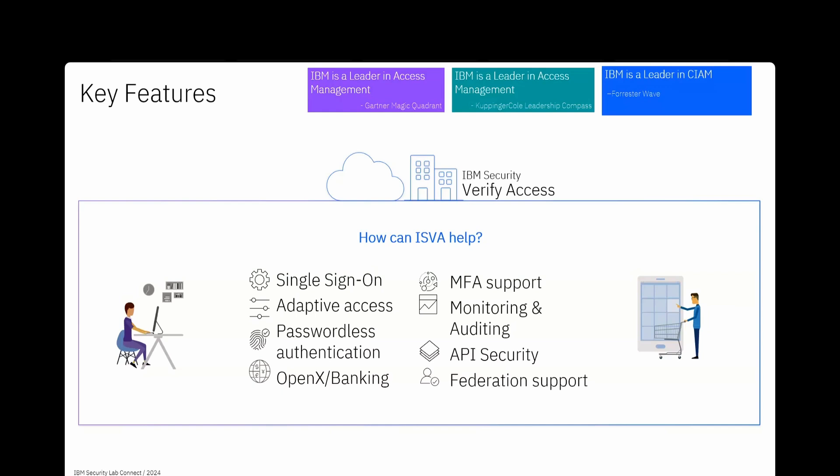ISVA also provides API security. Nowadays, most cloud applications use microservices, and these microservices-based APIs are everywhere and require secure communication. Mobile apps and single-page apps call microservices-based APIs, so you can leverage the advanced access control module capabilities in ISVA to secure API authentication and authorization. The federation support provides single sign-on between different unrelated domains using open standard protocols, which are now adopted by all SaaS applications in the market, making it easy to integrate with any access management solution.